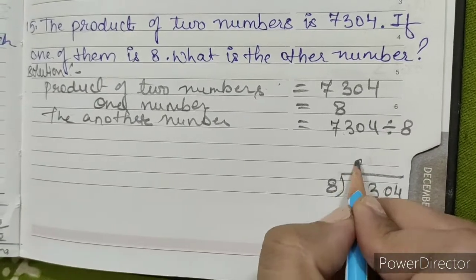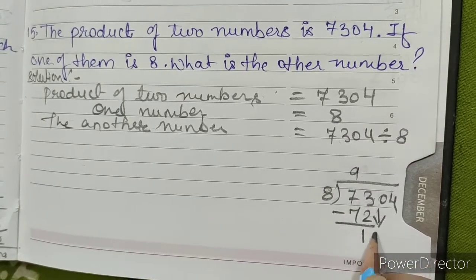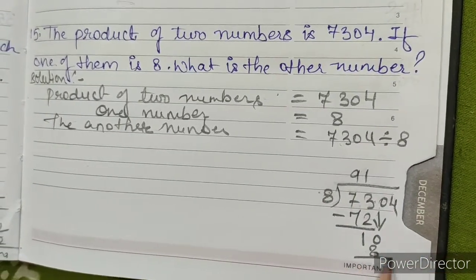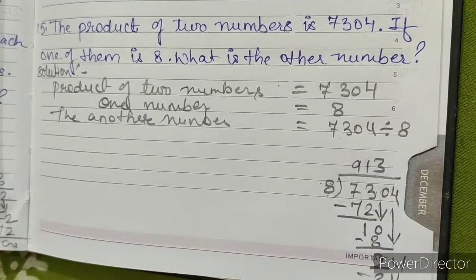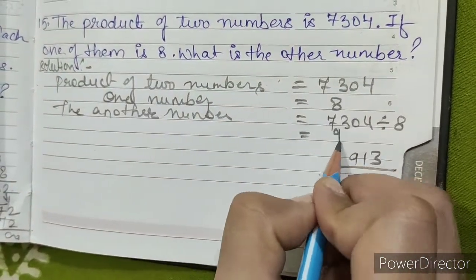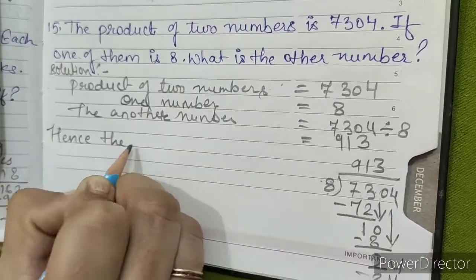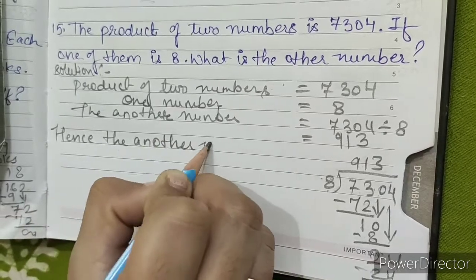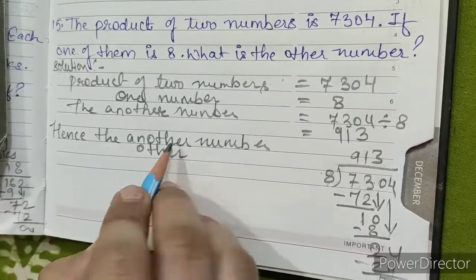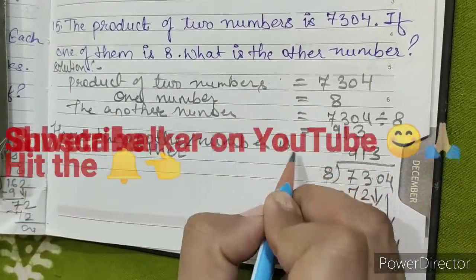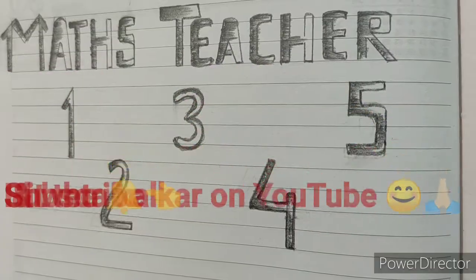7304 divided by 8: 8 nines are 72. 73 minus 72 is 1. Bring down 0: 8 ones are 8. 10 minus 8 is 2. Bring down 4: 8 threes are 24. 24 minus 24 is 0. So, the other number is 913. This is our answer. Thank you and have a nice day.